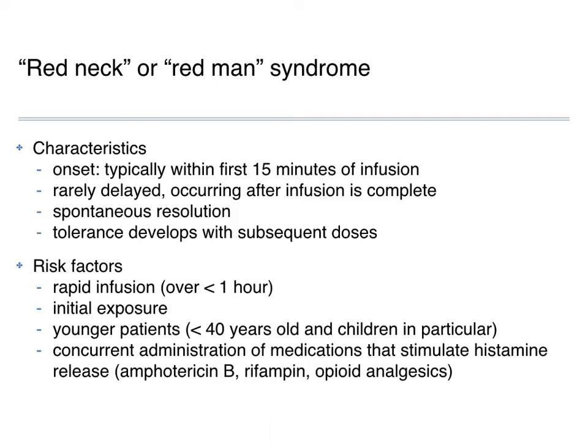Onset typically occurs fairly quickly — within the first 15 minutes of the infusion, though it can occur later. Patients develop a tolerance after a few doses. Risk factors include rapid infusion — infusing over 30 minutes greatly increases the odds — first exposure to vancomycin, younger patients, and concurrent drugs that also stimulate histamine release, such as amphotericin B, protamine, and opioids.